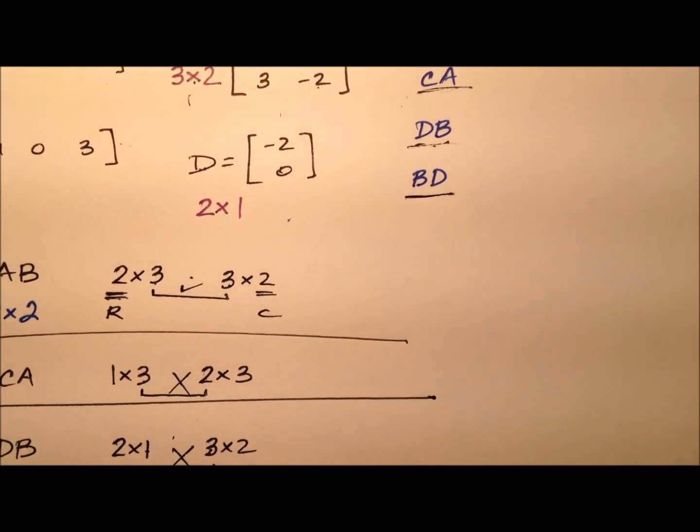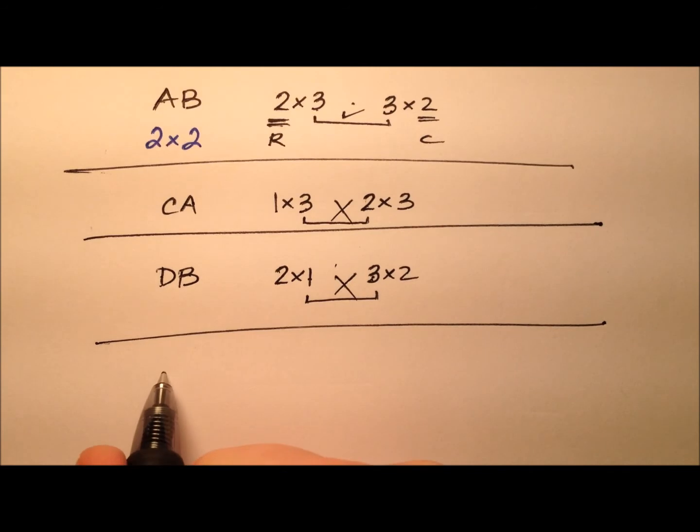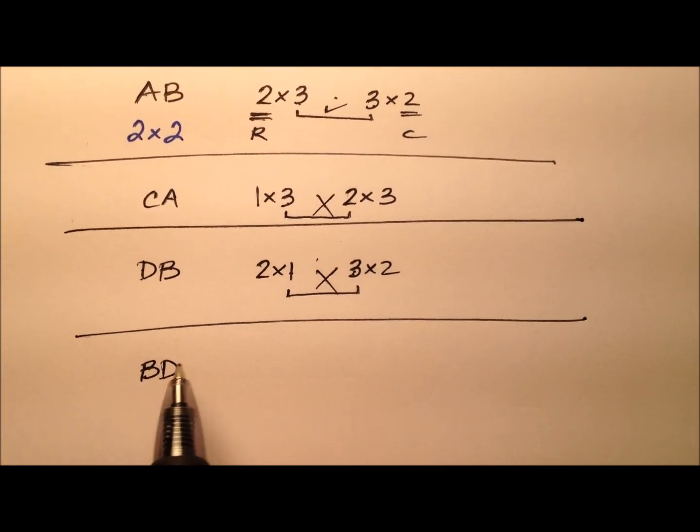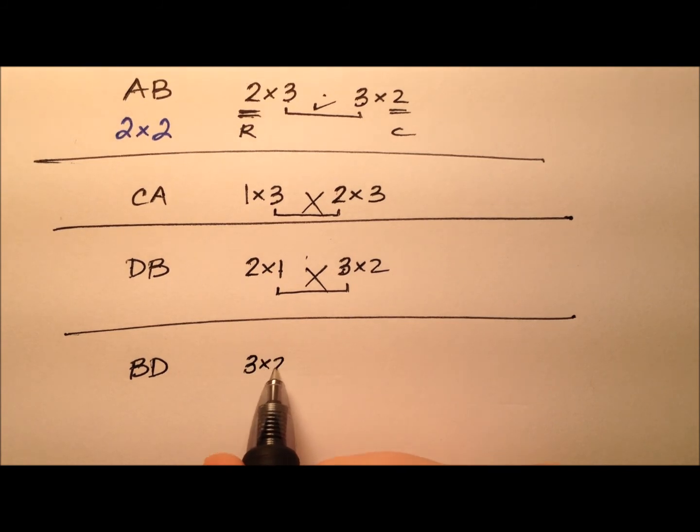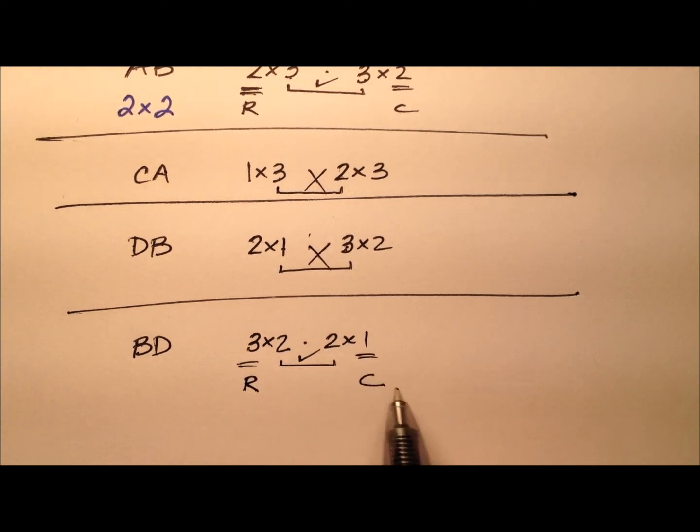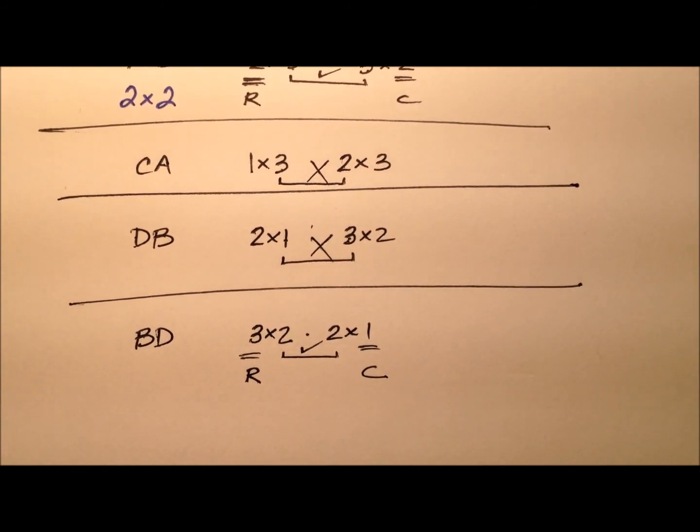However, let's look at this last one: BD. So BD. Well, the dimensions of B are 3 by 2, and the dimensions of D are 2 by 1. Looking at these inner values, they are indeed the same. So the product matrix will have 3 rows and just a single column. So the dimensions there will be 3 by 1.